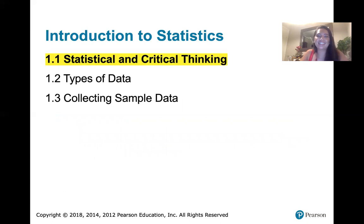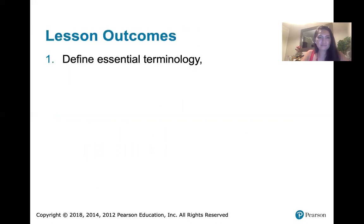This is chapter one, which covers three sections or three lessons. Our first section is section 1.1 in the text, which is called statistical and critical thinking. The lesson outcomes for the statistical and critical thinking section of the book are to define essential terminology — we really want to get on the same page about those important terms in the statistics class.